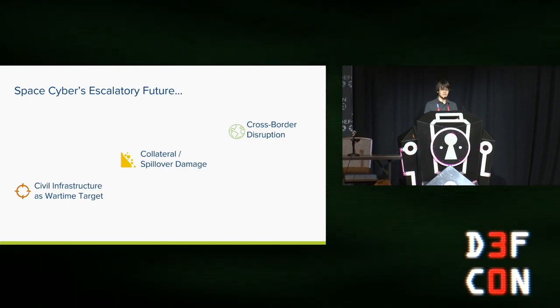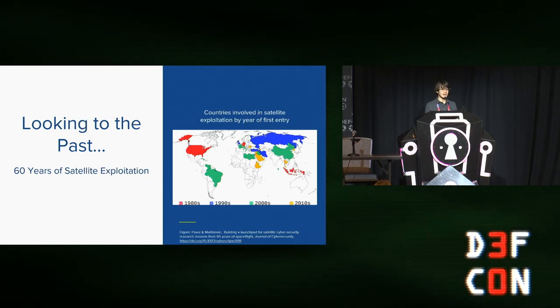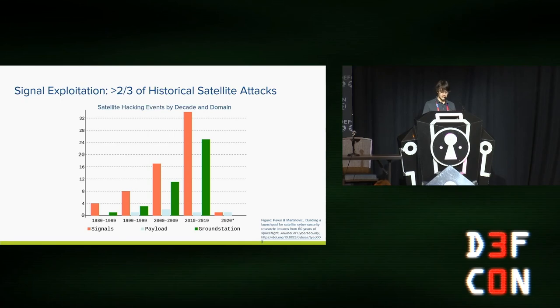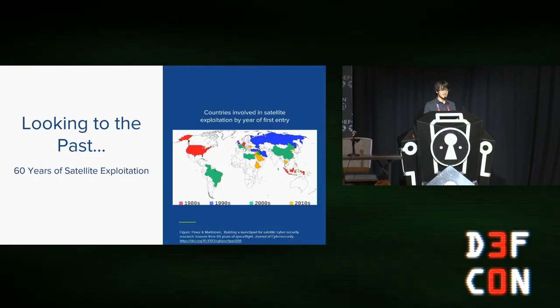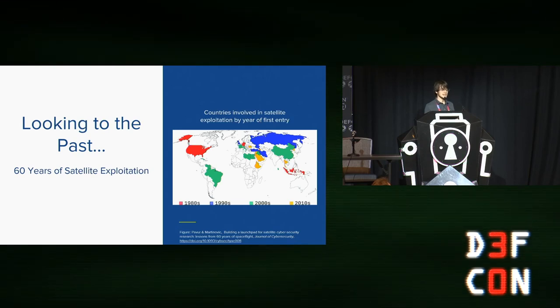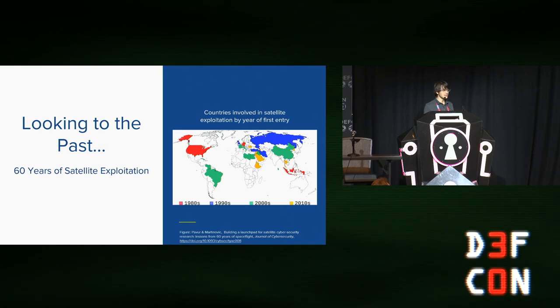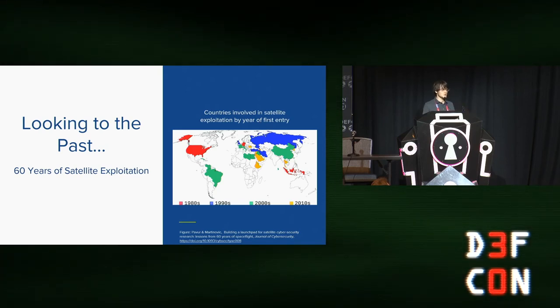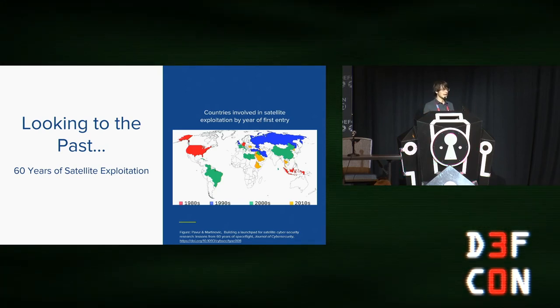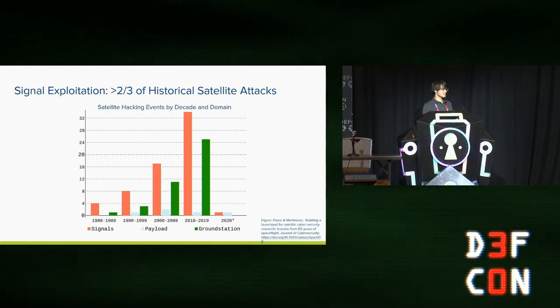One way to think about how to protect the future of space missions is to take a look at the past. It turns out satellite hacking has been going on for a very long time. I recently published a paper that looks at about 100 different satellite cybersecurity incidents. And everyone from big nation-state players like the Soviet Union and the United States to individuals who just wanted fame and notoriety have played the satellite hacking game. And one trend I picked out is that overwhelmingly people target the radio link for satellites.